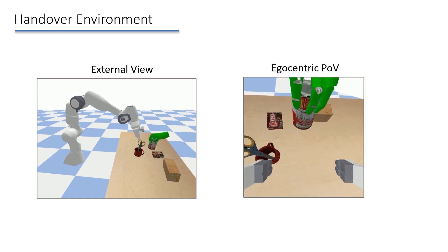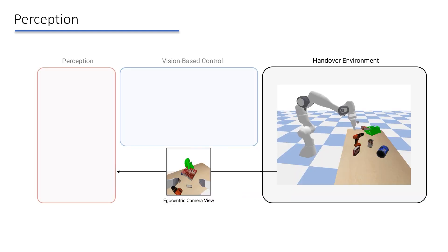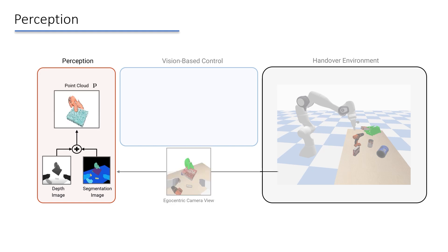The robot has a wrist-mounted camera that renders RGBD images. These images are sent to the perception module. The perception module uses segmentation masks and the depth image to compute a segmented point cloud of the hand and object.